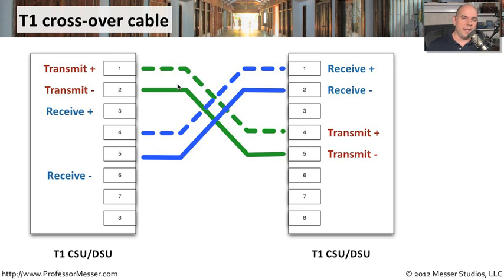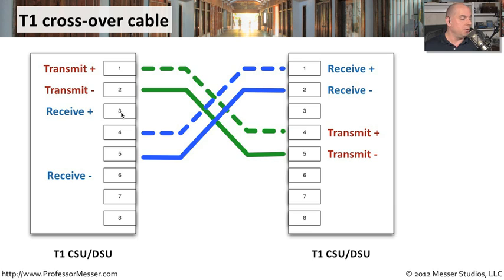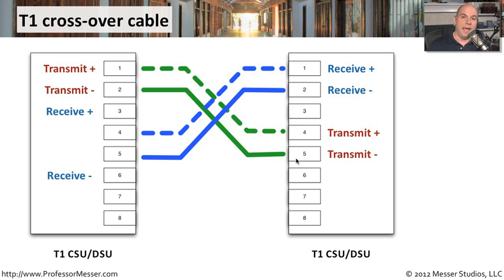In a T1 network, different pairs are used for communication compared to ethernet. For a T1 crossover, transmit is still pins 1 and 2, similar to ethernet, but receive is pins 4 and 5. So you swap pin 4 to pin 1, pin 5 to pin 2, and vice versa on the other side. With that T1 crossover cable in place, you can connect two CSU-DSUs back to back in a lab and communicate as if a live T1 connection were in the middle.